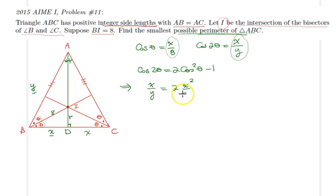So this implies x over y is equal to 2 times cosine theta, which was x over 8, so you will have x squared over 64 minus 1. And we can simplify the 2 and the 64 together to get 32, so we will get x squared minus 32 all over 32.